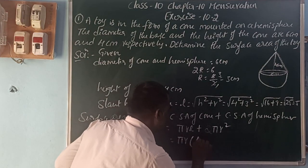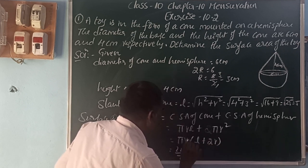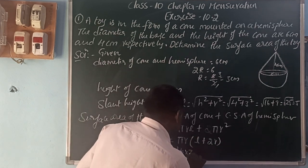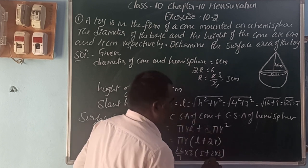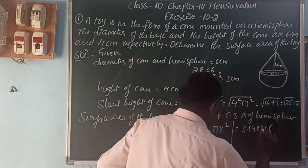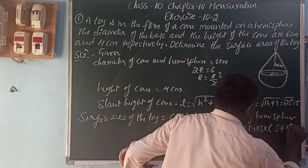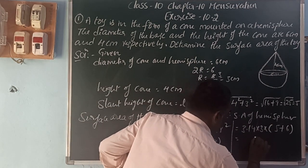Surface area equals πrl plus 2πr² equals πr(l plus 2r). So 22/7 times r which is 3, times l which is 5 plus 2 times 3.